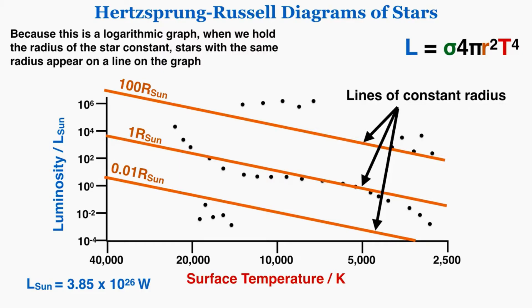Any two stars that appear along the same line of constant radius have the same radius as each other. As you go up and to the right on the graph, the radius of the stars that you're looking at, therefore the size of the stars that you're looking at, increases.